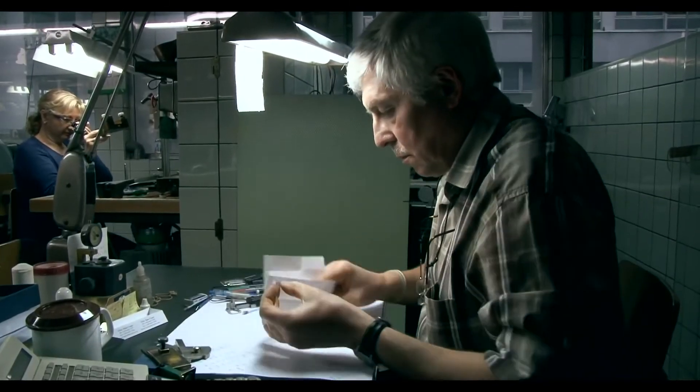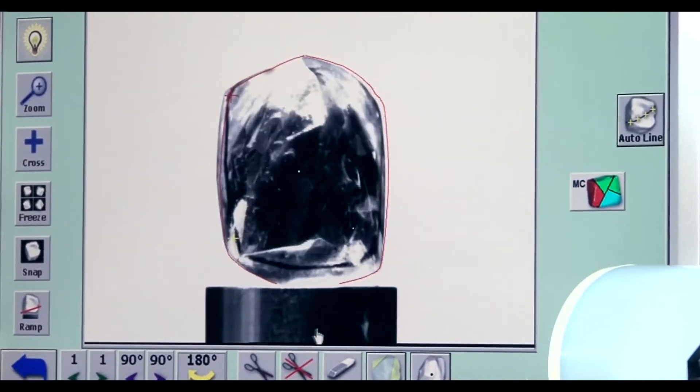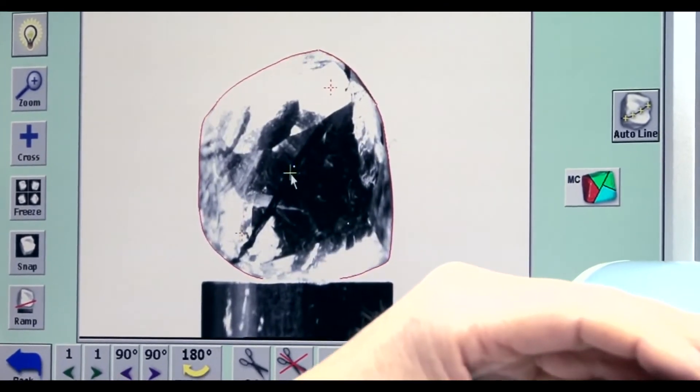Each diamond is first scanned into a computer using a sarin machine, and then using a sophisticated piece of computer software, the different cutting options can be analyzed.